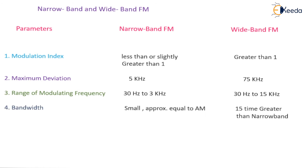The bandwidth of Narrowband FM is very small and is approximately equal to that of AM — which was 2 times the modulating frequency. Wideband FM bandwidth is almost 15 times greater than the Narrowband FM bandwidth.